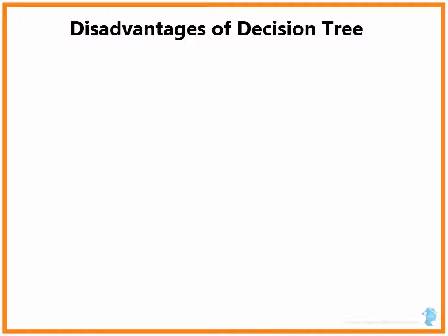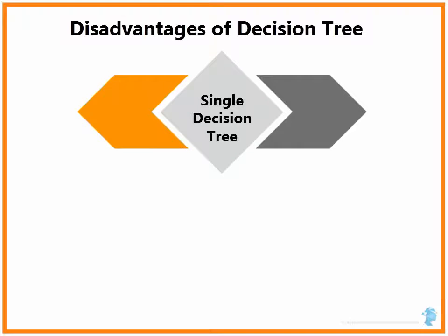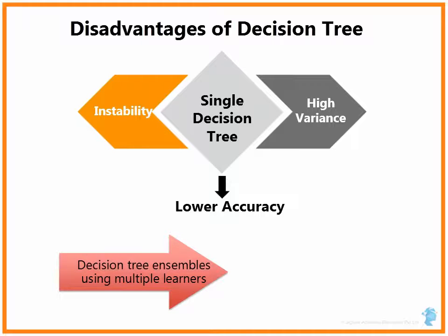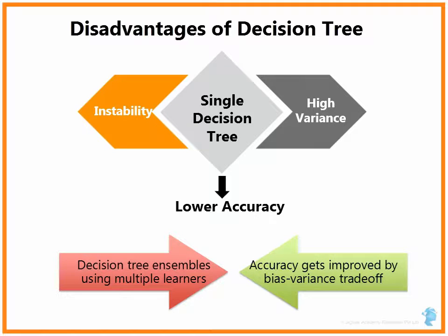Individual decision trees suffer from instability and high variance. Because of these two factors, the accuracy is lower for a single decision tree. Hence the rise of decision tree ensembles using multiple learners, where accuracy gets improved due to the bias-variance trade-off.